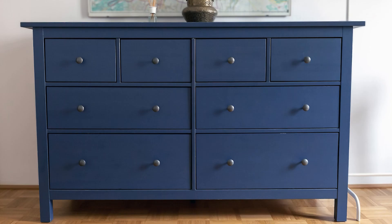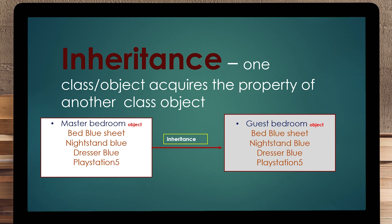The master bedroom object has in it a bed with blue sheets, a nightstand that's blue, a dresser that's blue, and a PlayStation. The guest bedroom is going to inherit from the master bedroom, so it ends up with the exact same things — a bed with blue sheets, a blue nightstand, a blue dresser, and the PlayStation. Inheritance is straightforward and clear.